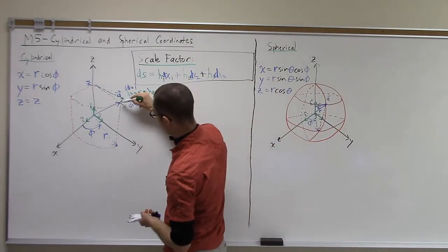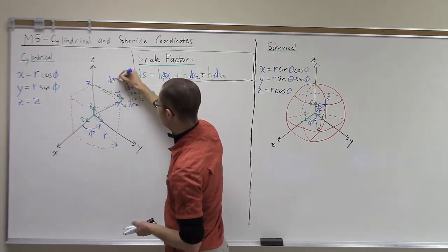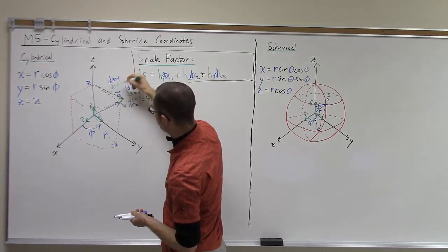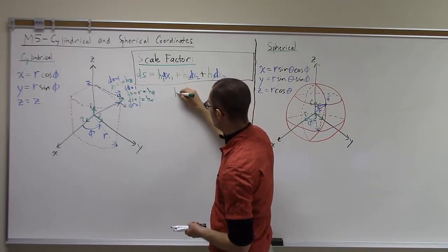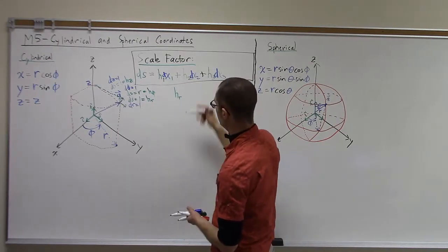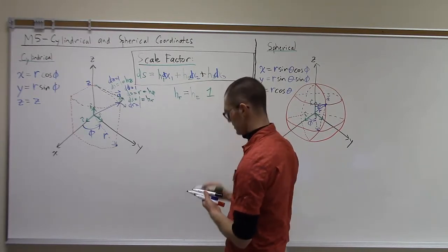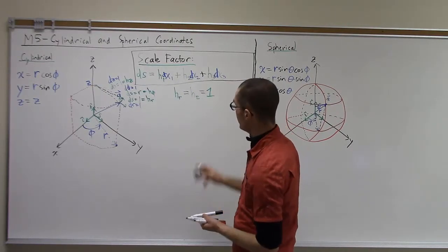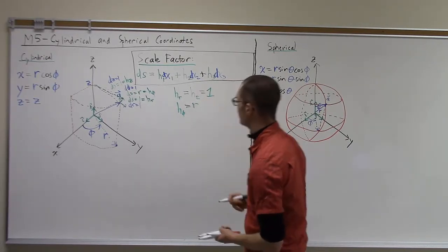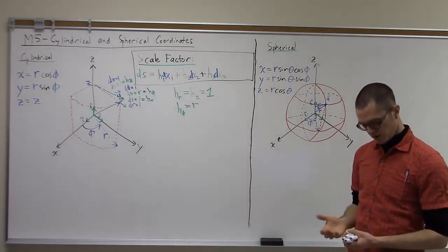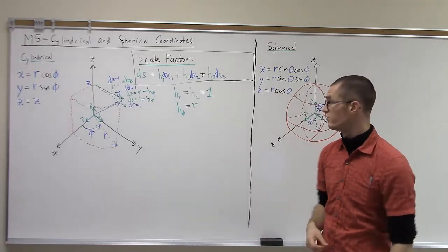The third coordinate in this system is z. If we make a unit change in z — going straight up — when dz is equal to 1, ds is also equal to 1. That gives h sub z equal to 1. To summarize for the cylindrical coordinate system: h sub r equals 1, h sub z equals 1, and h sub phi equals r.